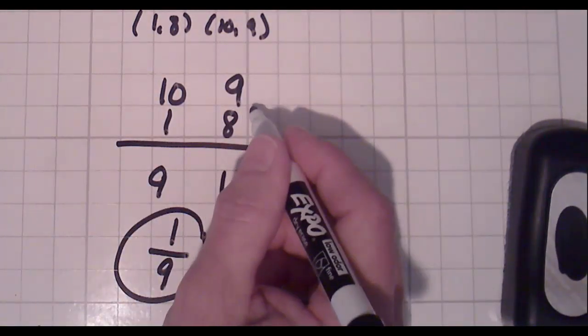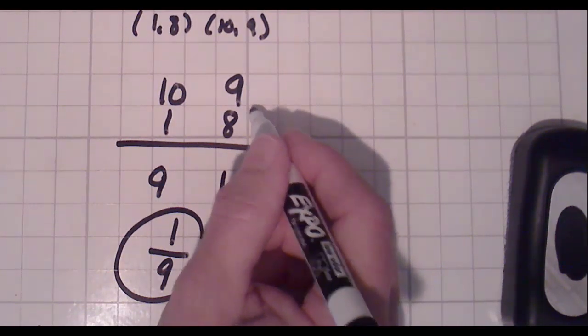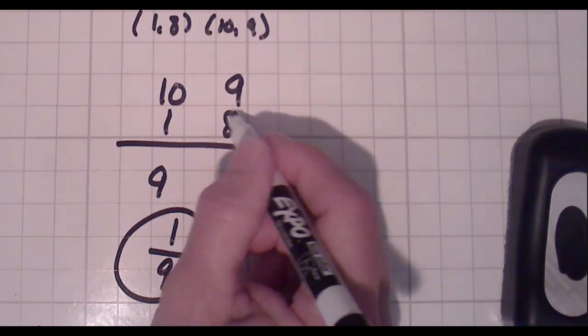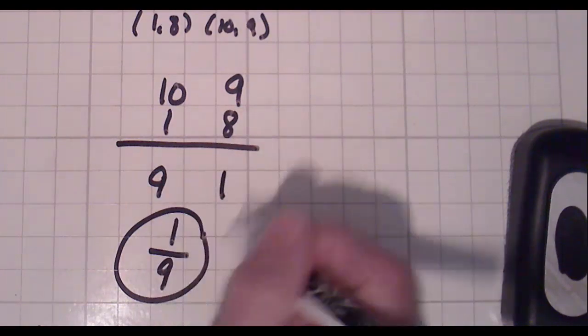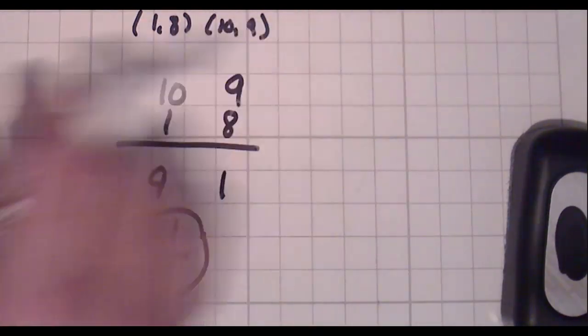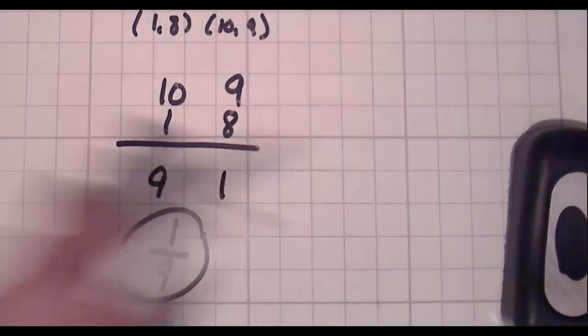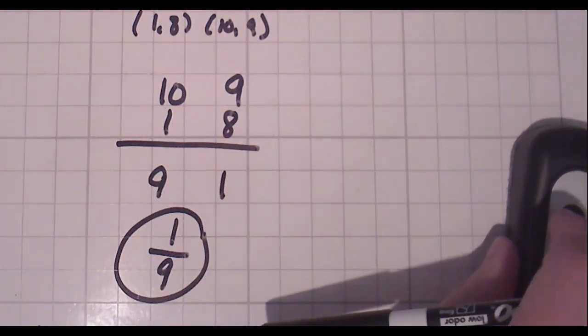When you think about it, we're doing exactly the same thing as the y2 minus y1 over x2 minus x1. That's exactly what we're doing. We're just setting it up a little bit different, so it's a little bit easier, a little bit more manipulative, if you will. Not quite as cumbersome.